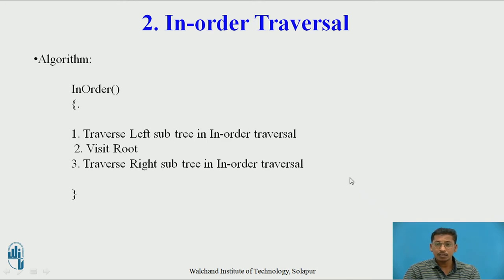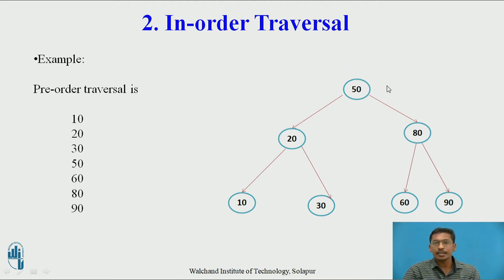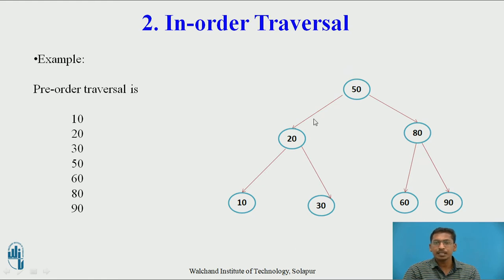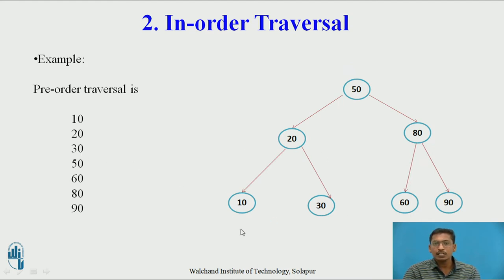The next traversal technique is in-order traversal. In in-order traversal there are three steps: first traverse the left subtree in in-order, then visit root, then traverse the right subtree in in-order. For this binary search tree: traversing the left subtree — 20 is the sub-root, so 10 (left) comes first, then 20 (root), then 30 (right). Then visit the main root 50. Then traverse the right subtree: 60 (left of 80), then 80 (root), then 90 (right). So the in-order traversal is: 10, 20, 30, 50, 60, 80, 90.